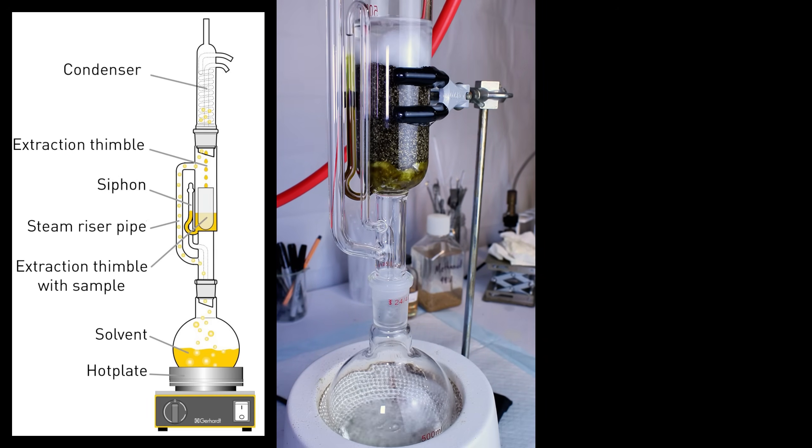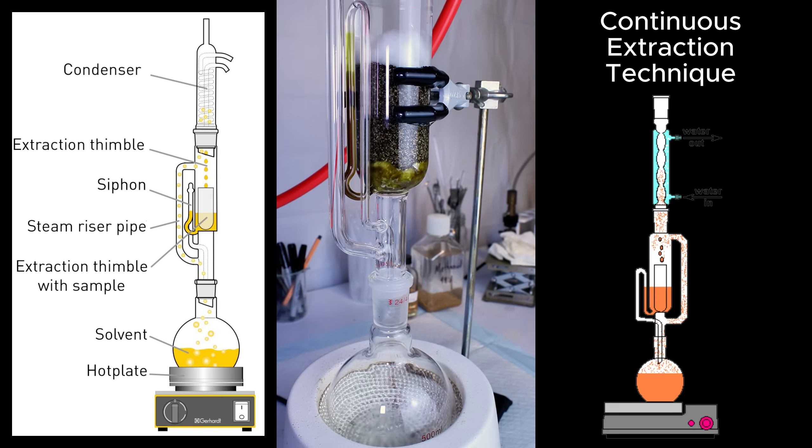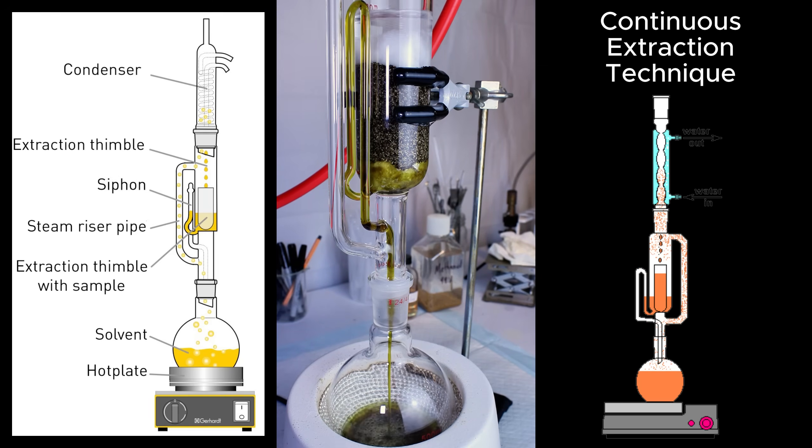At that point, it will immediately start to evaporate again and condense clean isopropyl back on top of the black pepper. This builds until it triggers the siphon again, and the process repeats, which makes this a continuous extraction technique. The cool thing about this process is that due to the fact that black pepper is being continuously rinsed with fresh isopropyl, you can achieve a nearly 100% efficient extraction with a relatively small amount of solvent.